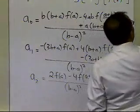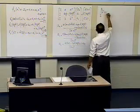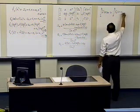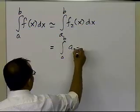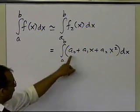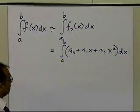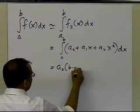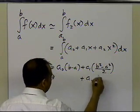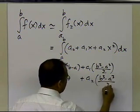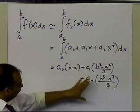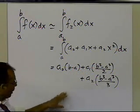To find the value of the integral, it is approximately equal to the integral of the second-order polynomial f₂(x) from a to b, which is the integral of (a₀ + a₁x + a₂x²) dx from a to b. After performing exact integration using calculus, I substitute back the values of a₀, a₁, and a₂ obtained previously.